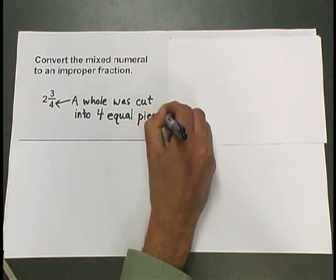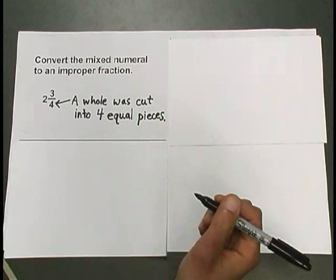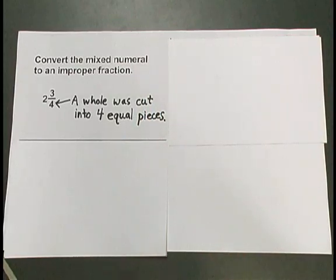Because the fraction came from a whole that was cut into 4 equal pieces, we want to cut all of the wholes involved in this problem into 4 equal pieces.